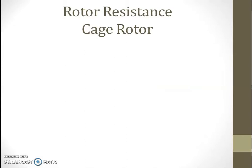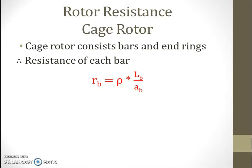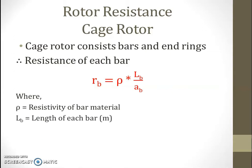Now in case of rotor resistance for squirrel cage type of rotor, we know that in a squirrel cage rotor we have rotor bars and end rings. Resistance of each bar is given by the equation: rho multiplied by length divided by cross section area, where rho is the resistivity of the bar material, Lb is the length of each bar, and Ab is the area of each bar.